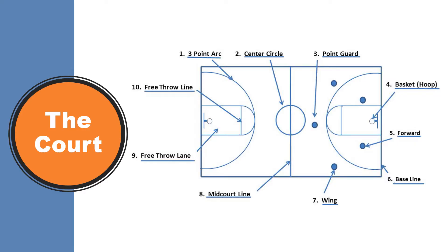Here is a diagram of the court. Number one, the three-point arc. Number two, the center circle. Number three, this is usually where the point guard is positioned. Number four, the basketball hoop. Number five, the forward position. Number six, the baseline. Number seven, the wing. Number eight, mid-court line. Number nine, free throw lane. And number ten, the free throw line.